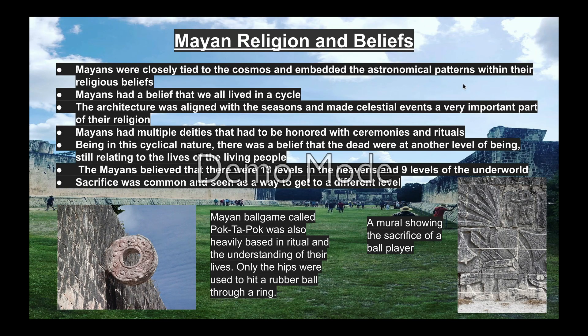Mayan religion and beliefs: Mayans were closely tied to the cosmos and embedded astronomical patterns within their religious beliefs. They believed they lived in a cycle, and all their architecture was aligned with the seasons, making celestial events a very important part of their religion. There were multiple deities that had to be honored with ceremonies and rituals. Being of a cyclical nature, they believed the dead were at another level of being, still relating to the lives of the living. Mayans believed there were 13 levels in the heavens and 9 levels in the underworld, and sacrifice was seen as a way to reach a different level.